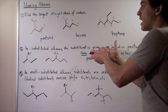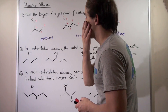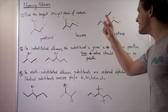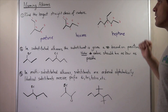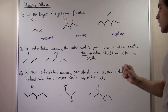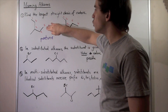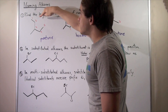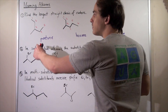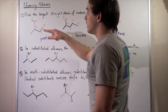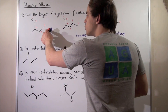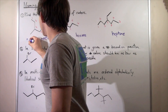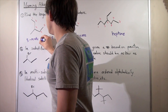We're not done naming these yet — we'll come back after rule number two. Rule number two: in substituted alkanes, the substituent is given a number based on its position on the carbon backbone, and the number value should be as low as possible. In example one, our substituent is this methyl group. Starting from either side, the methyl is on the third position — this molecule has symmetry. So we write 3-methylpentane.